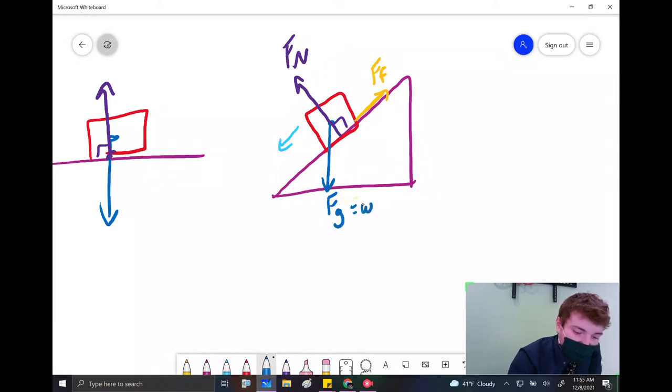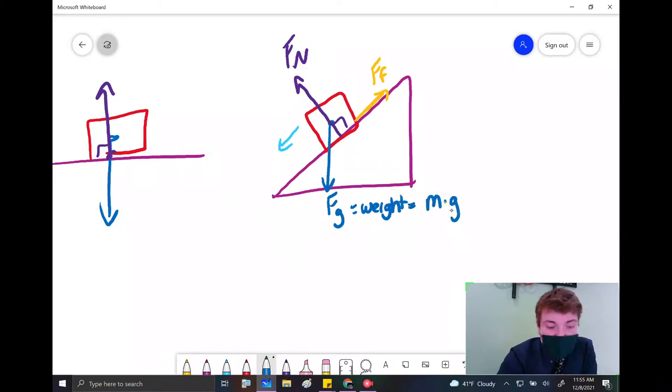Gravity should be going this way, Fg, or in other words, the weight. Or in other words, mass times 9.81 should be going down.